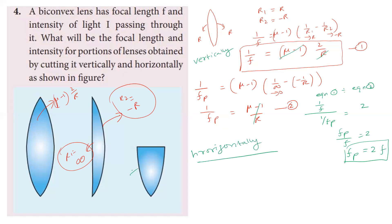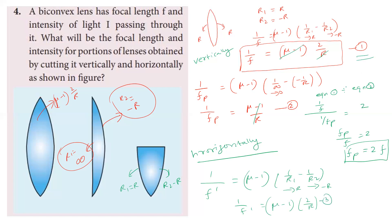For the horizontally cut lens, the first surface radius is R and the second surface radius is minus R. Using the formula: 1 by F' equals mu minus 1 into 1 by R1 minus 1 by R2. With R1 equal to R and R2 equal to minus R, this gives 1 by F' equals mu minus 1 into 2 by R. Comparing with equation 1, F' equals F. So the focal length of the vertically cut piece remains F.